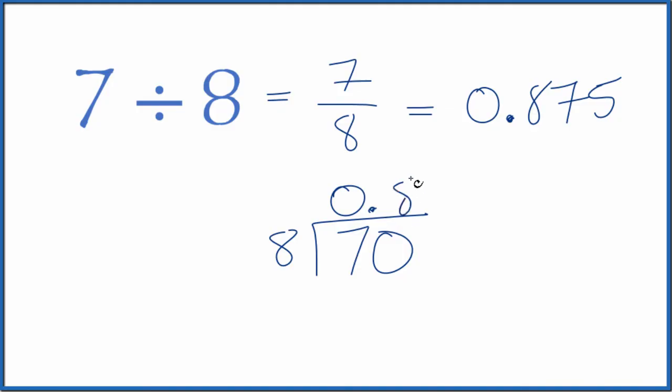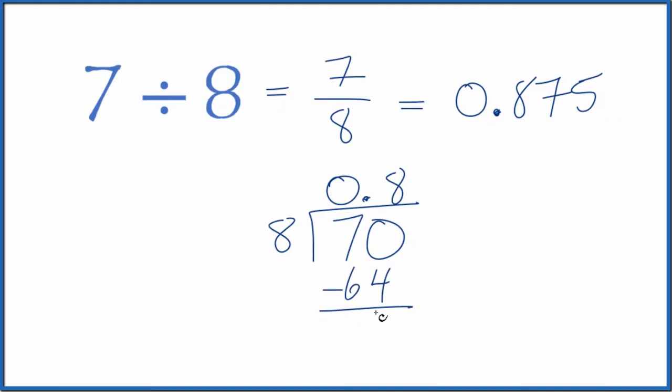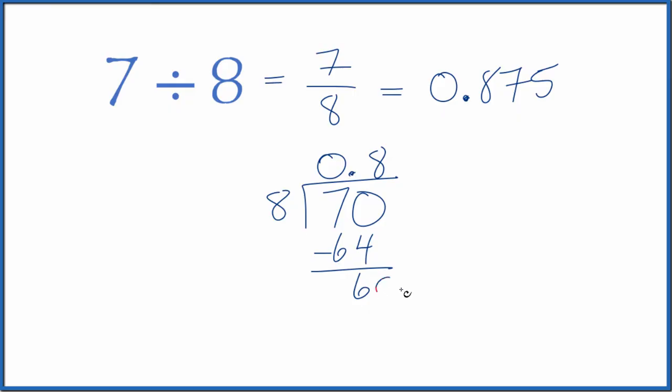So 8 times 8, that's 64. When we subtract, we get 6. Let's call it 60, move over one. 7 times 8, that's 56. Subtract, we get 4.